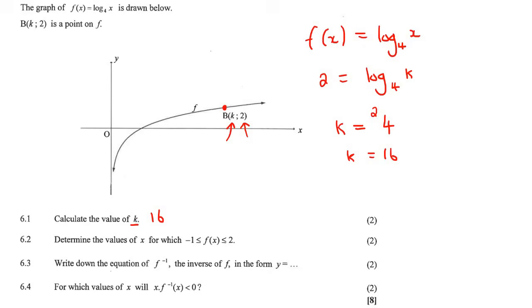Now it says determine the values of x for which this graph is bigger than minus 1 and smaller than 2. Okay, so these are y values, minus 1 and 2. Let's quickly go find the y values of 2, which would be here, and minus 1 would probably be here. So they want to know between which x values is the graph in between those.